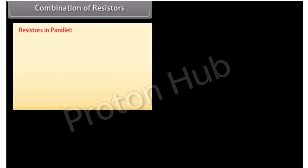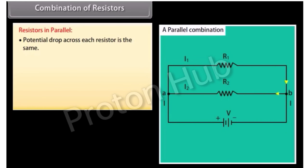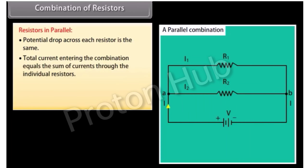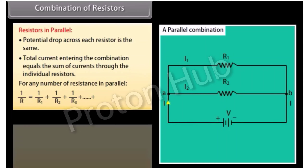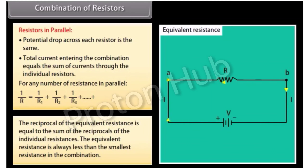In parallel, the potential drop across each resistor is the same. Total current entering the combination equals the sum of currents through the individual resistors. For any number of resistors in parallel, 1/R = 1/R1 + 1/R2 + 1/R3 + … The equivalent resistance is always less than the smallest resistance in the combination.